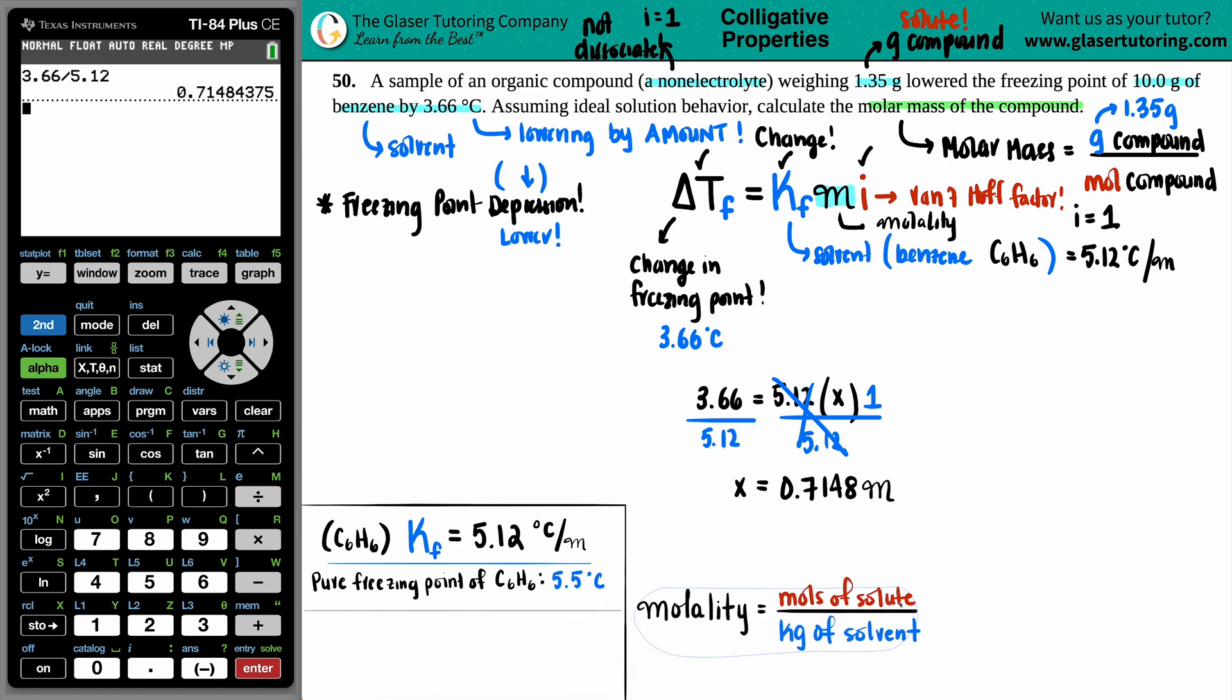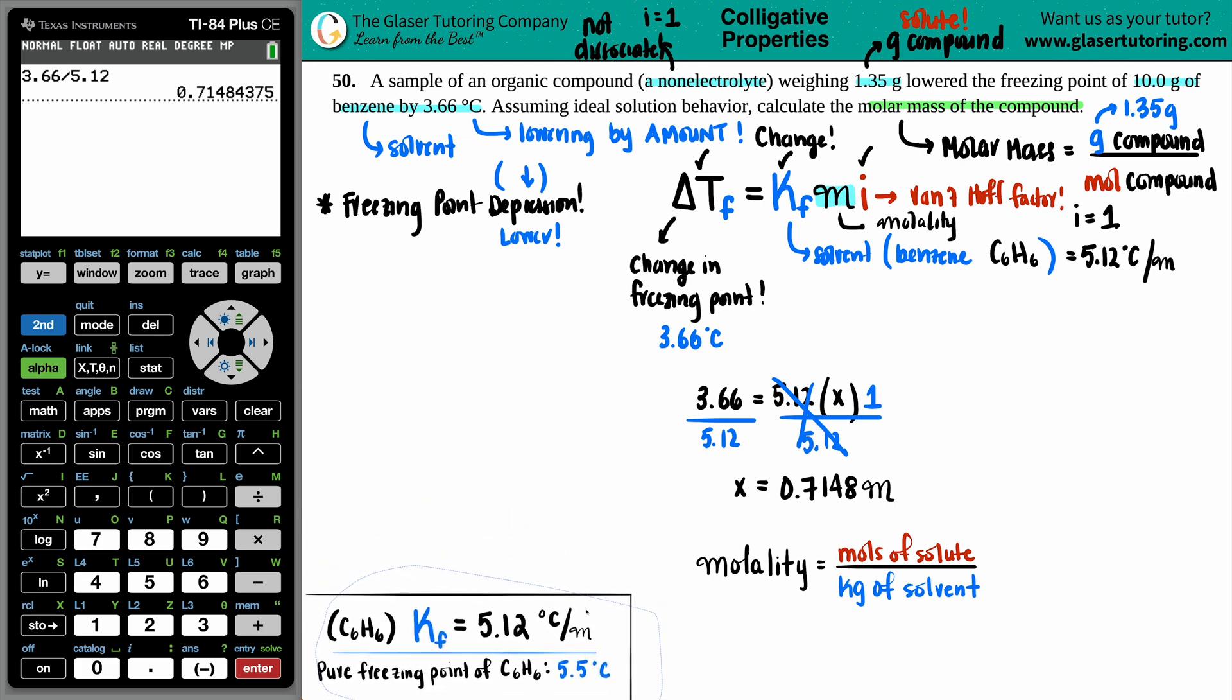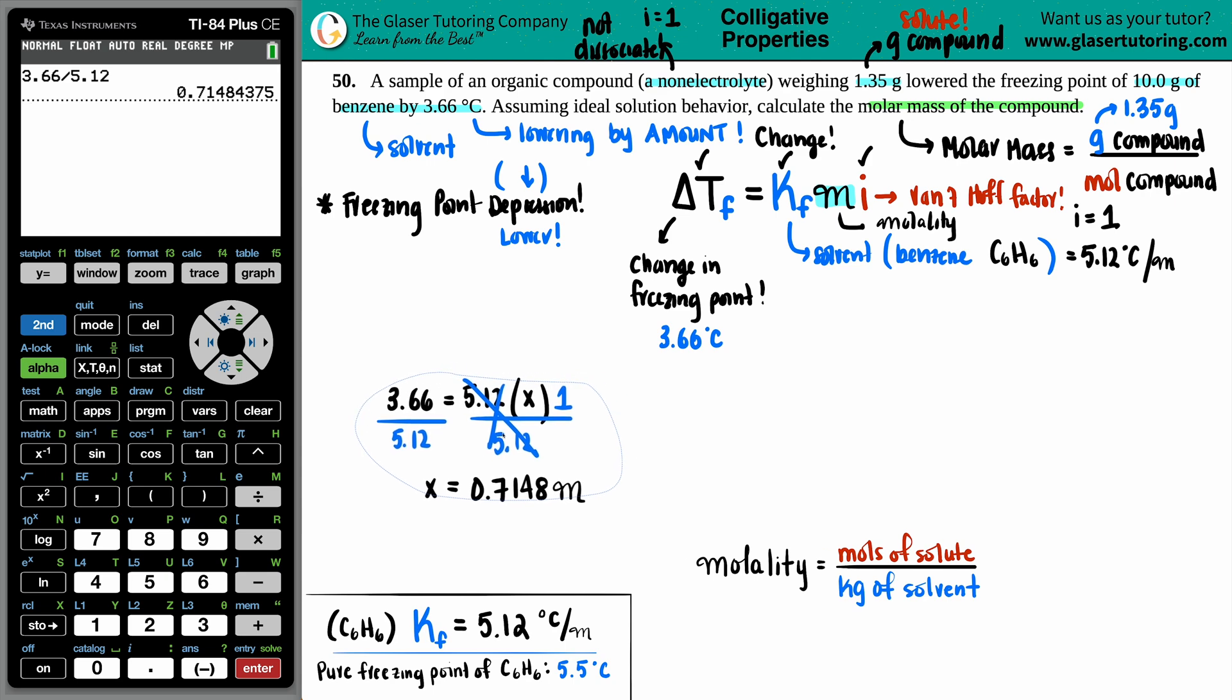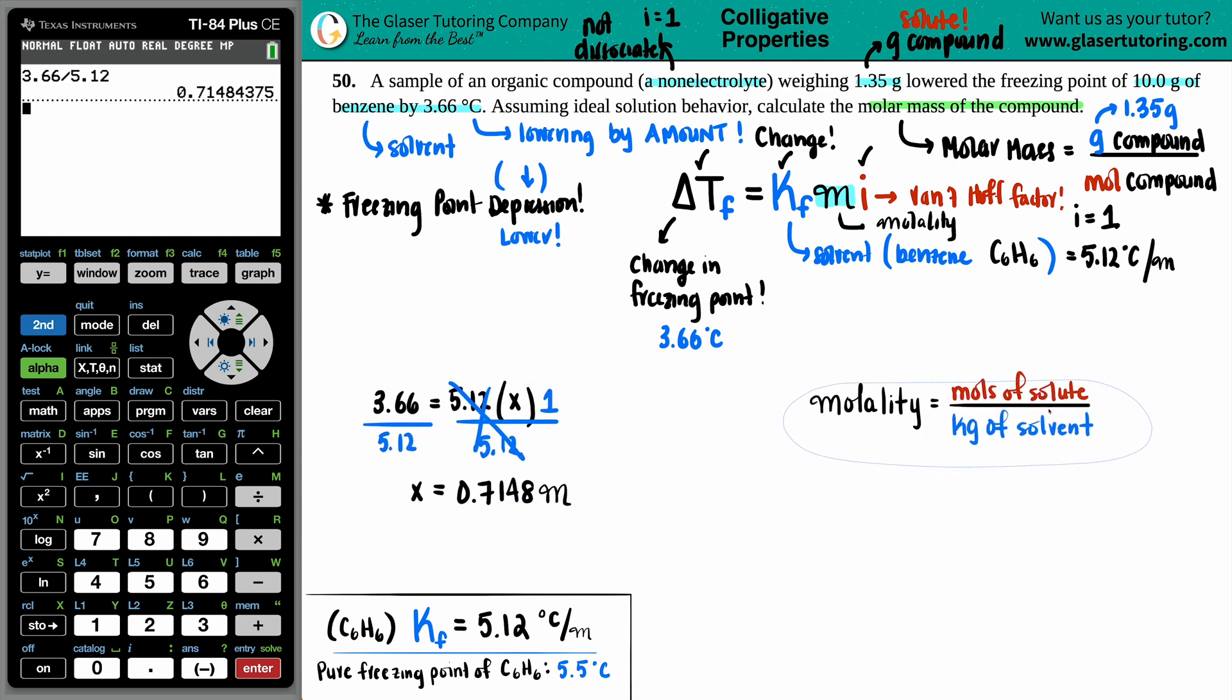We're still not there yet. We still want to find the moles of that compound, but maybe the molality will get us somewhere. What is the general formula for molality? So molality equals the moles of that solute divided by the kilograms of the solvent. We did state that the solute was the organic molecule, the 1.35 grams. But I can't go from grams to moles because I don't know what specific compound this is. Do we know the kilograms of the solvent? The kilograms was the benzene, and they did say that we had 10.0 grams of it.